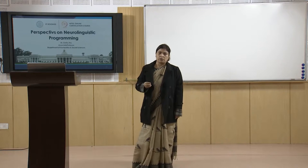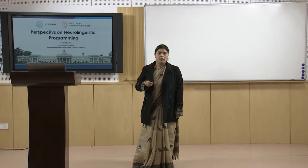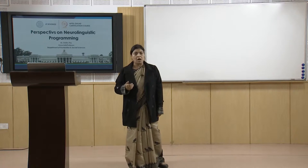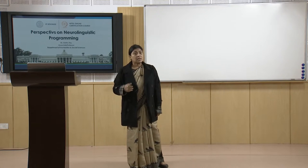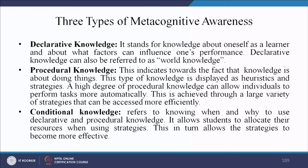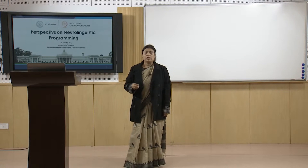Second is procedural knowledge, which indicates that knowledge is about doing things. This type of knowledge is displayed as heuristics and as a strategy. A high degree of procedural knowledge can allow individuals to perform tasks more automatically, achieved through a large variety of strategies that can be accessed more efficiently. Third is conditional knowledge, which refers to knowing when and why to use declarative and procedural knowledge, allowing students to allocate their resources when using a strategy.